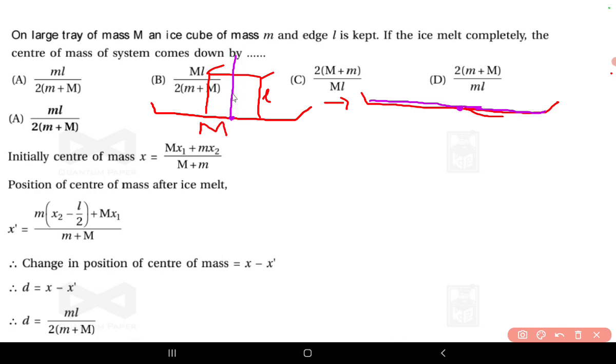Then the center of mass of this ice cube will be at a distance of l by 2. Now what is the equation for the center of mass of a system? Let's say y_cm. Here it is solved in the form of x_cm. Let us not consider this solution. So your y_cm will be equal to m1*y1 plus m2*y2 divided by m1 plus m2.